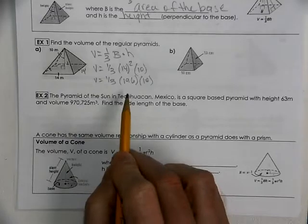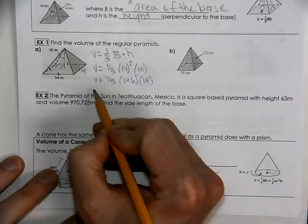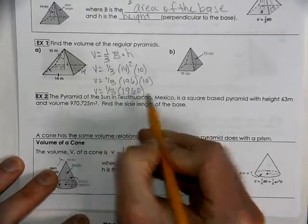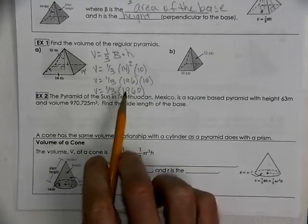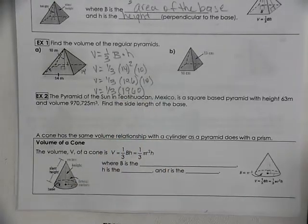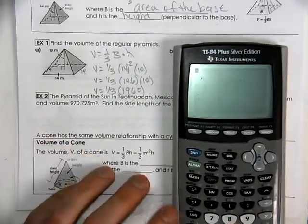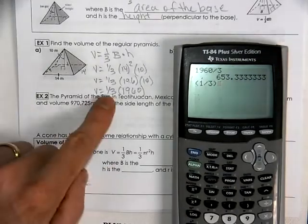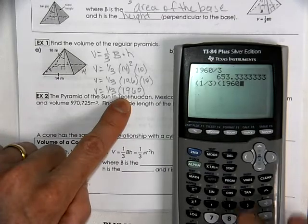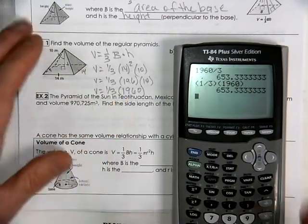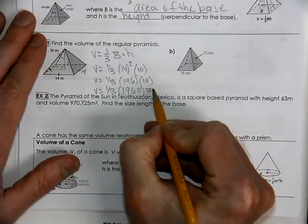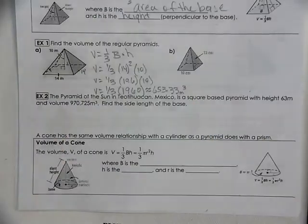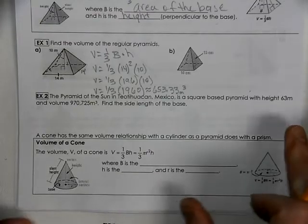So that's one-third of 196 times 10. Three doesn't divide evenly into 196 or 10, so we compute one-third times 1960. You can either divide 1960 by 3, or enter (1/3) times 1960 into your calculator — either way gives approximately 653.33 cubic meters.